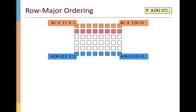One of the most important characteristics of a C array is that it's stored in row major order. This means each row is stored in memory before the beginning of the next row. At the lowest address we find A[0][0], and successive elements store the next columns of that same row. When we reach the rightmost column, the next row begins, proceeding until the last element A[R-1][C-1] sits at the highest memory address.